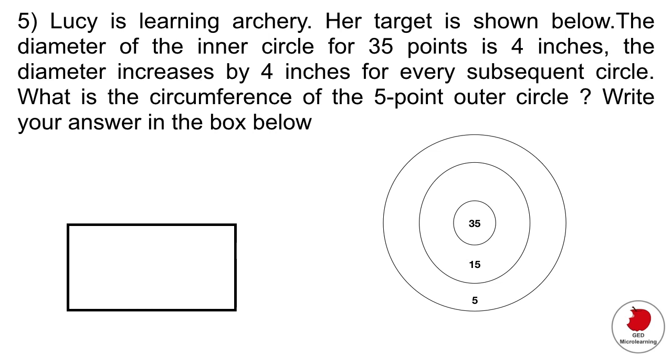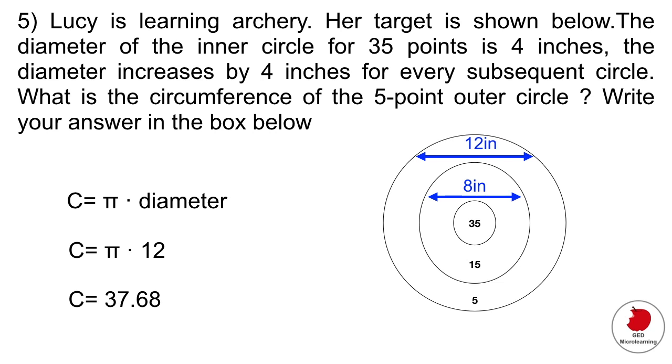Question five is a geometry question. Lucy's learning archery. Her target is shown below. The diameter of the inner circle for 35 points is four inches. The diameter increases by four inches for every subsequent circle. What is the circumference of the five point outer circle? Write your answer in the box below. You have to rewrite this and remember that the inner circle is four inches and then every single circle increases by four, so the next one would be eight inches and then the following one would be 12. So the diameter of the five point outer circle is 12 inches and all you have to do is plug that number into that equation which is the one for circumference of a circle. That gives you 37.68.